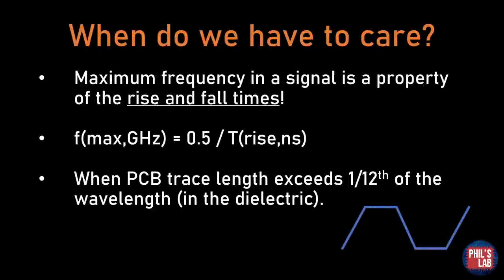Let's have a look at when we actually have to care about all of this. For example, if you have a 100 MHz clock signal, the problem might not be that the clock has a fundamental frequency of 100 MHz. The problem lies in the rise and fall times — those sharp transitions — and this is actually where the maximum frequency in a signal is located. To calculate the maximum frequency approximately in GHz, it's about 0.5 divided by the rise or fall time in nanoseconds. When the PCB trace length exceeds 1/12th of the wavelength in the dielectric, we need to start taking care of our PCB design.